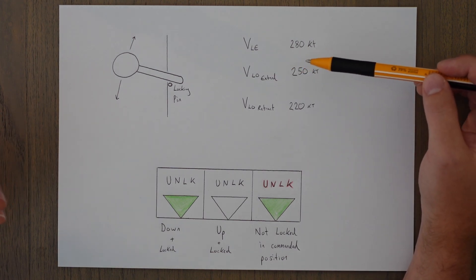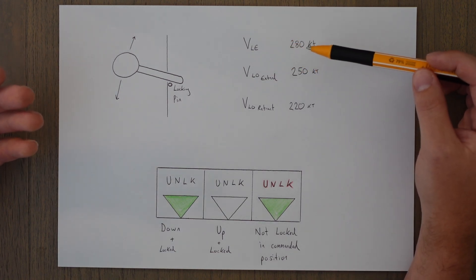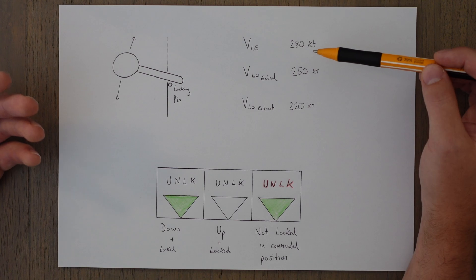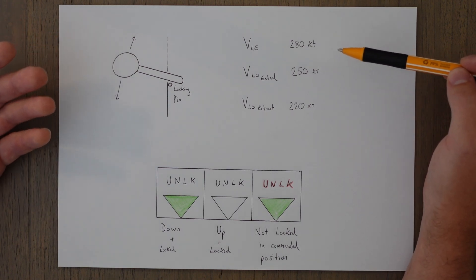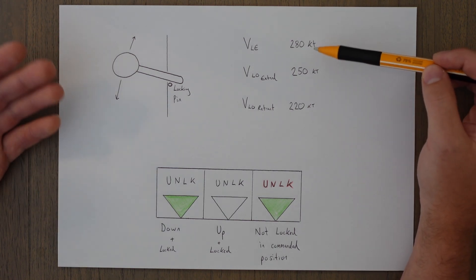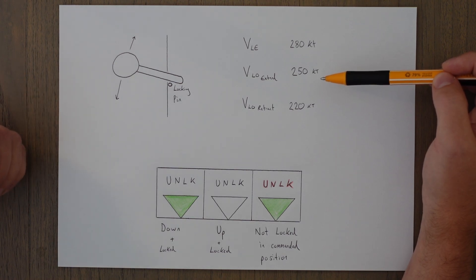VLE stands for the velocity with the landing gear extended, and it is the maximum speed that we can fly with the gear extended. These are just the A320 figures, so we've got 280 knots that we can fly with the gear down.